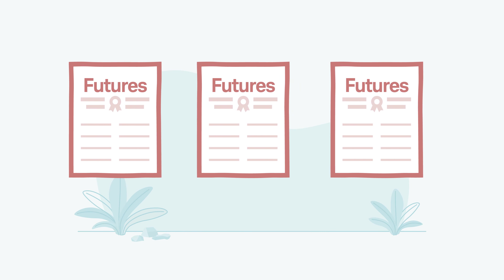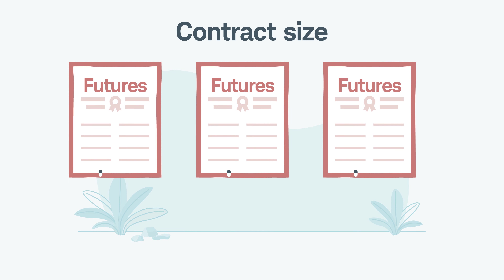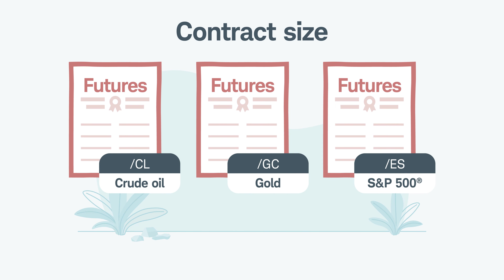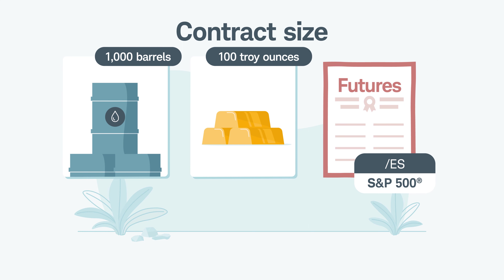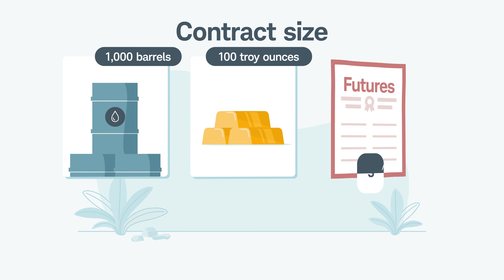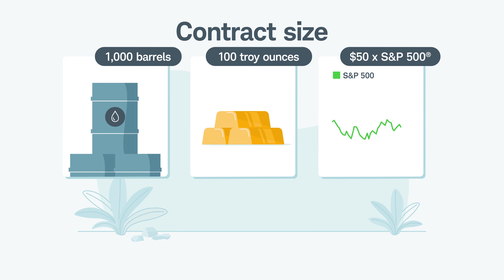A third standard component is contract size. Each commodity or financial instrument has a standardized contract size that doesn't change. For example, one contract of crude oil always represents 1,000 barrels. One contract of gold futures represents 100 troy ounces. And one contract of e-mini S&P 500 futures represents $50 times the price of the S&P 500 index.